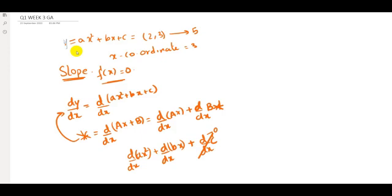We get 2ax, using the rule d/dx(xⁿ) = n·xⁿ⁻¹, plus b — since b is a constant the d/dx(bx) = b. So dy/dx = 2ax + b. We are given that the value of the slope at point (2, 3) equals 5.